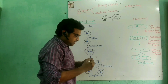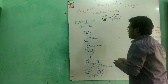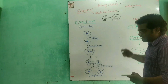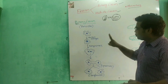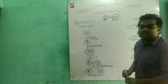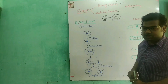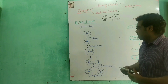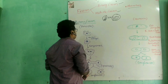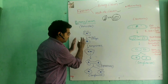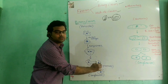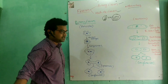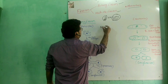Binary fission is the type of division in which the parent individual divides into two daughter individuals which are identical to each other and also to their parent. The type of cell division involved is mitosis.